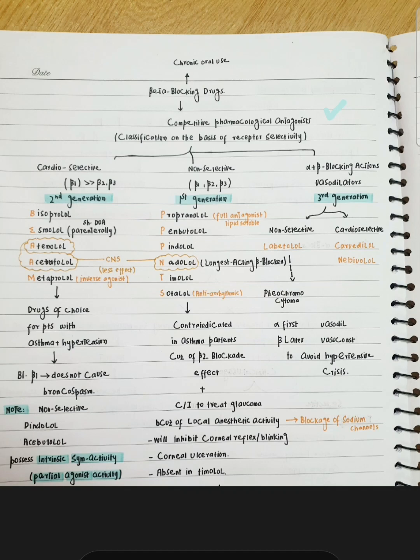We have classified this into three categories: first generation, second generation, and third generation. I have written the second generation first because in the book it starts with the discussion of the second generation, which are cardioselective drugs. We call them cardioselective because they are primarily acting on the beta-1 receptors and have milder effect on the beta-2 and beta-3.